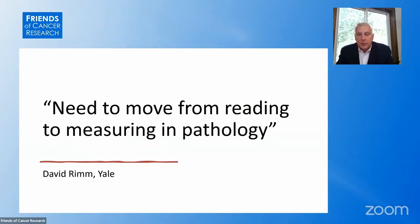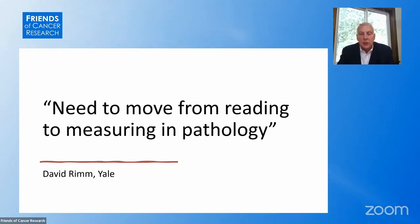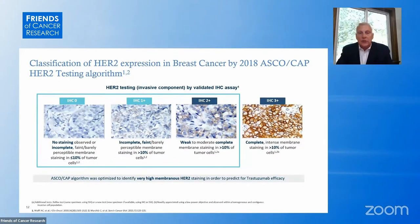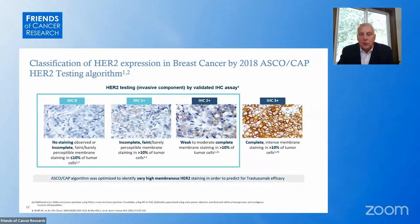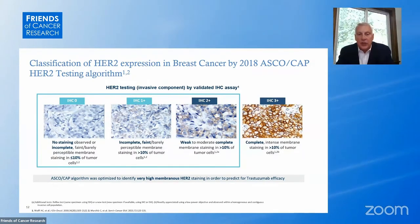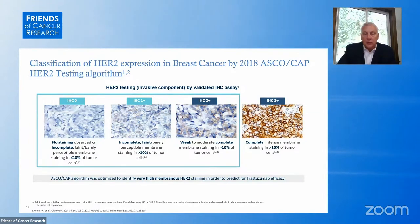An important next step in digital pathology is to go from what David Rim calls reading to measuring. Pathologists read slides and give their interpretation, but it's much more difficult for them to measure quantitatively features within a section or IHC. This is increasingly relevant to HER2 testing. As we move from HER2 high versus HER2 low to looking at HER2 ultra-low patients, it's increasingly difficult to distinguish IHC 1+ from IHC 0. Methodologies of quantitative continuous scoring using IHC will become quite important here, as well as for other ADCs.